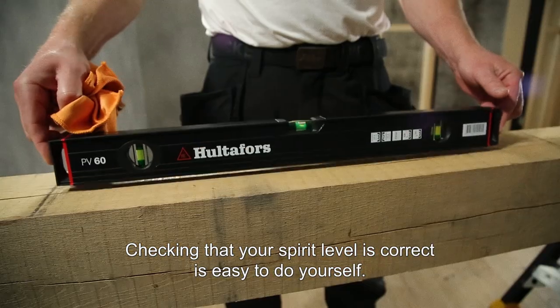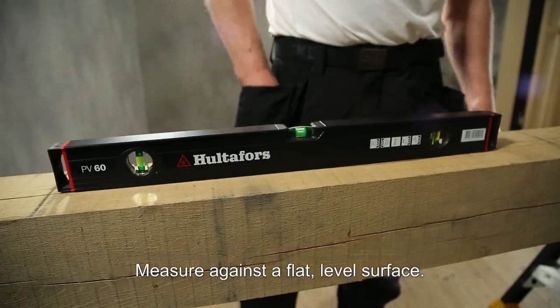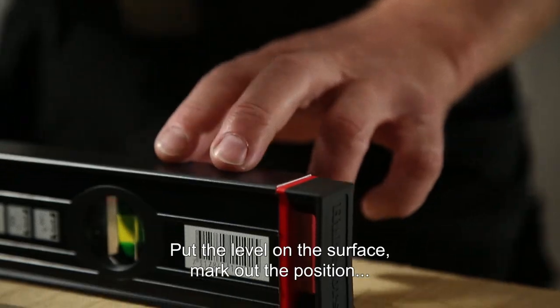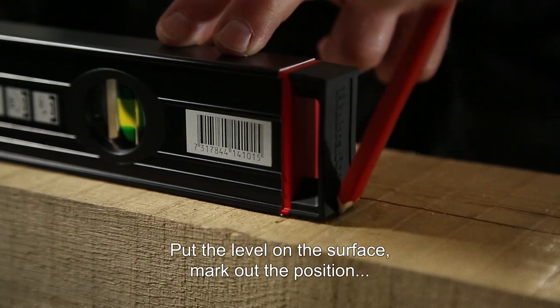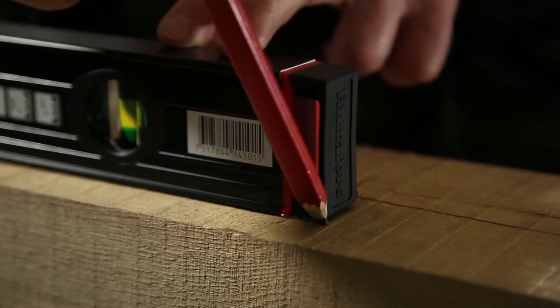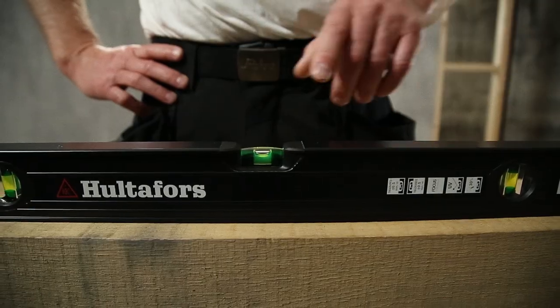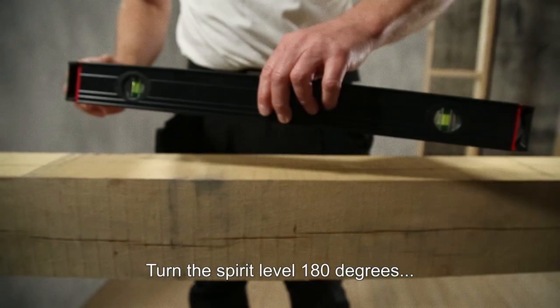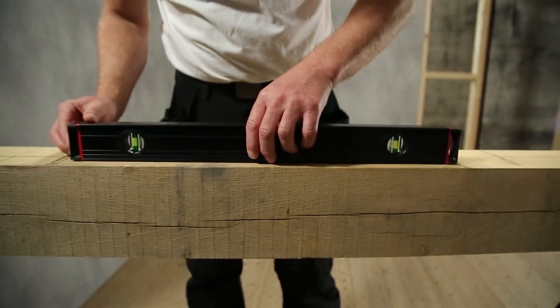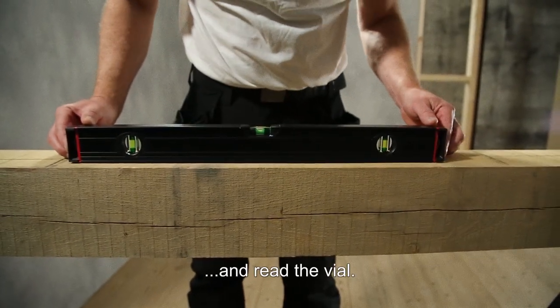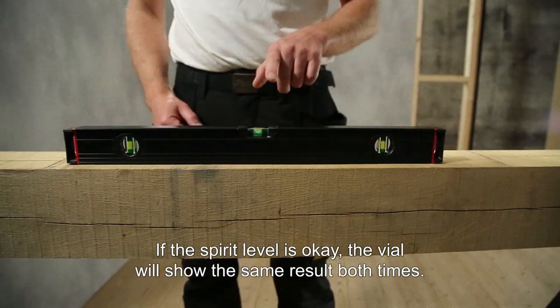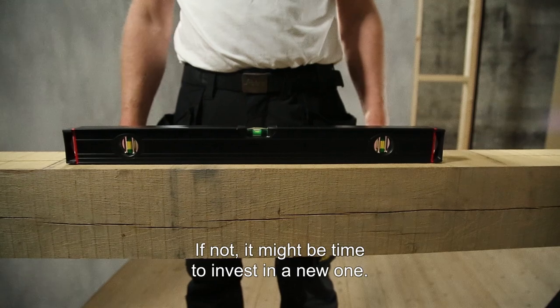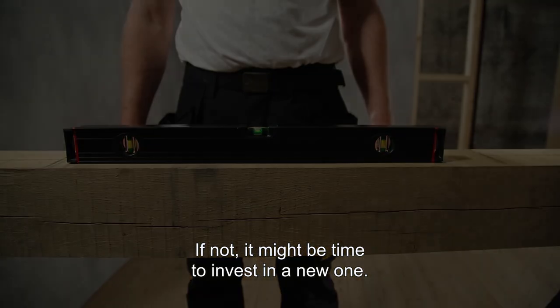Checking that your spirit level is correct is easy to do yourself. Measure against a flat level surface, put the level on the surface, mark out the position, and read the vial. Turn the spirit level 180 degrees and read the vial. If the spirit level is okay, the vial will show the same result both times. If not, it might be time to invest in a new one.